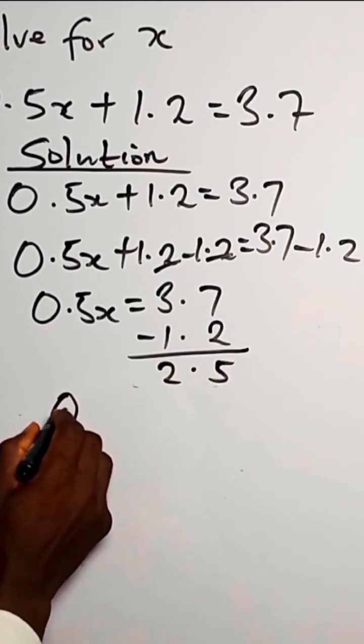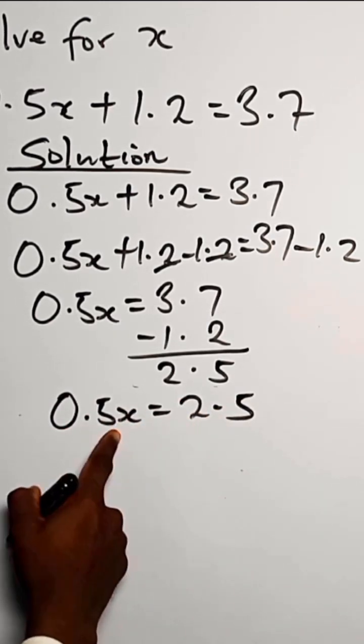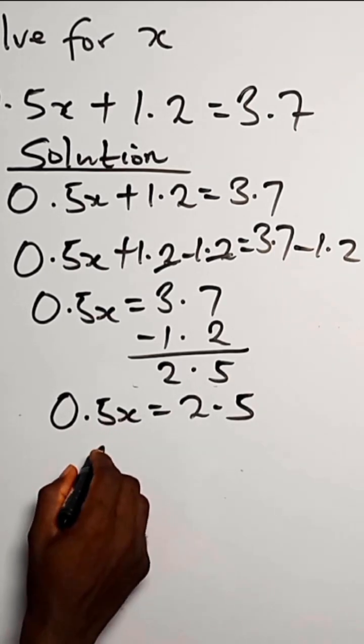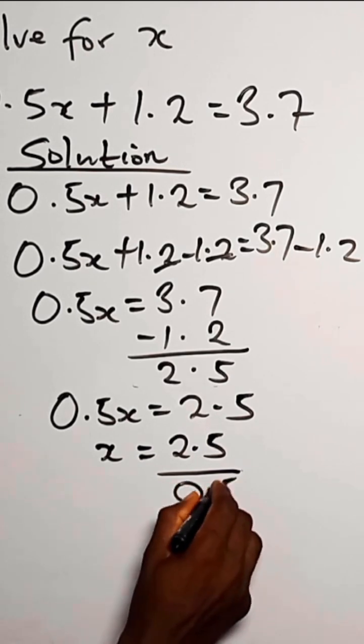So when we equate this to 2.5, we divide both sides by 0.5 to have x. So x equals 2.5 divided by 0.5.